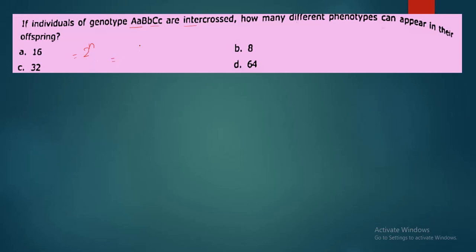2 raised to n. How many heterozygotes are in your sample? 3 heterozygotes — A, B, and C. So 2 raised to 3 equals 2 into 2 into 2, which gives 8. So the correct option is option B.